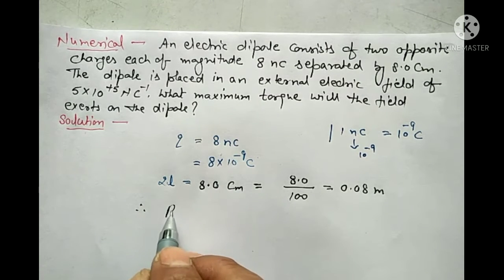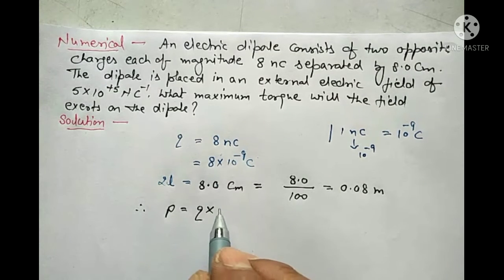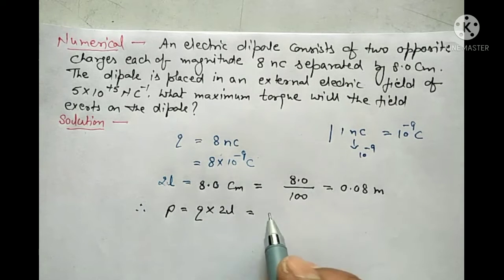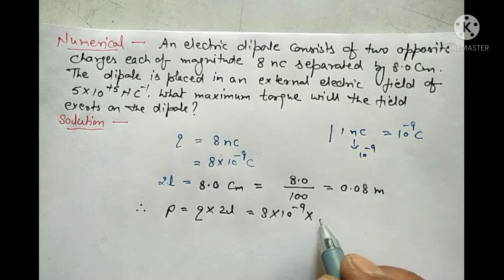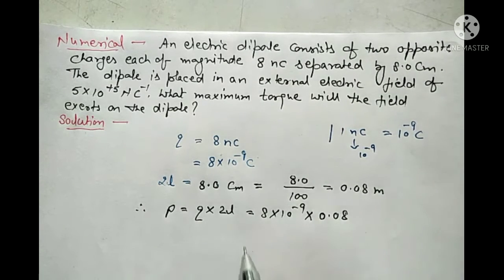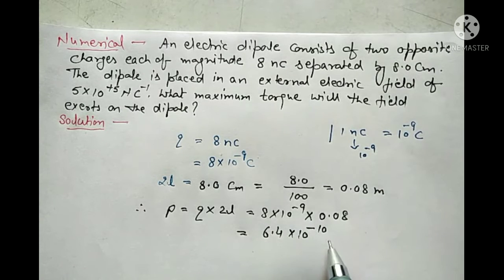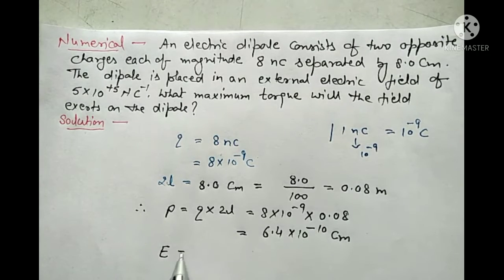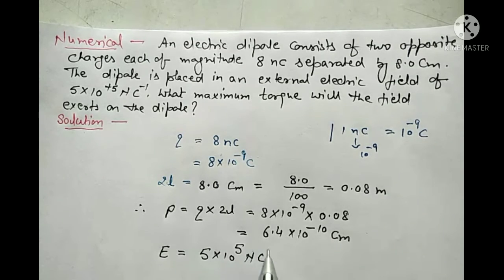We know that dipole moment P is the product of the magnitude of charge and dipole length, that is P = Q × 2L. So P equals 8 × 10⁻⁹ multiplied by 0.08, which gives 6.4 × 10⁻¹⁰ coulomb meter. The electric field is also given: E = 5 × 10⁵ Newton per Coulomb.